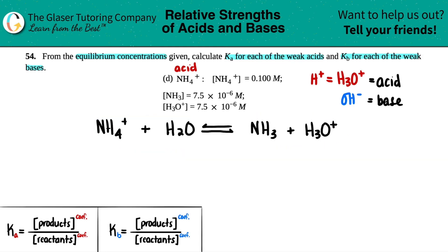Let's write out our equilibrium concentrations: NH4+ is 0.100 molarity, NH3 is 7.5×10^-6 molarity, and H3O+ is 7.5×10^-6 molarity.